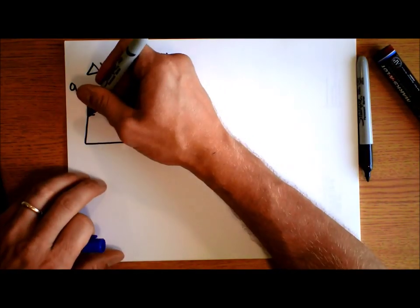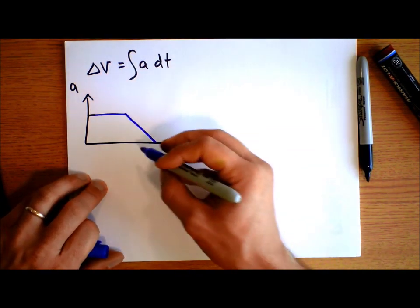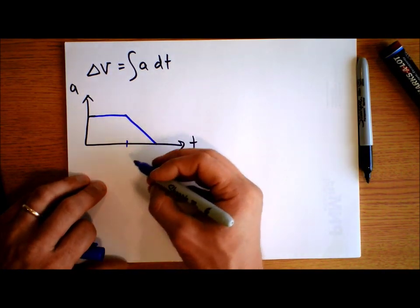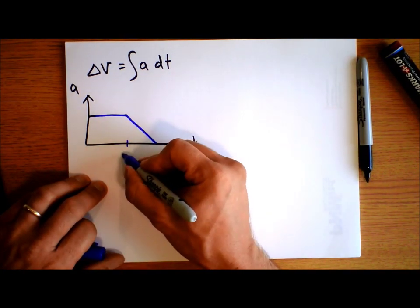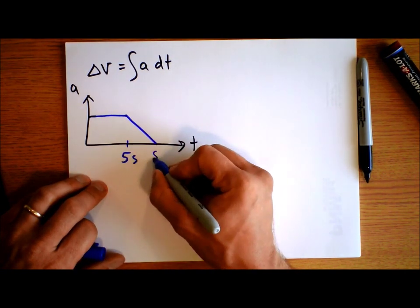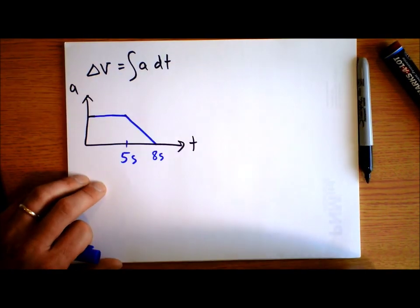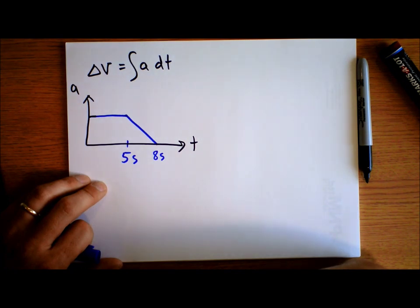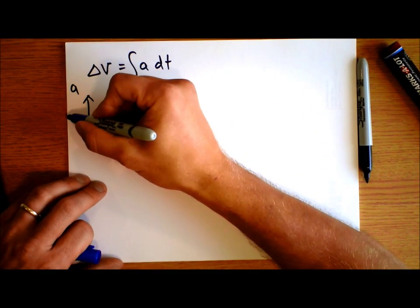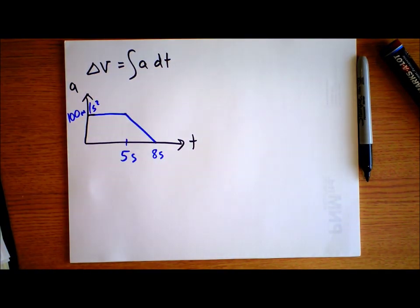Let's say this large acceleration phase happens over a period of 5 seconds, and the burndown takes another 3 seconds, so we're at 8 seconds total. The initial acceleration is probably several g's — let's say it's 10 g's, so about 100 meters per second squared.